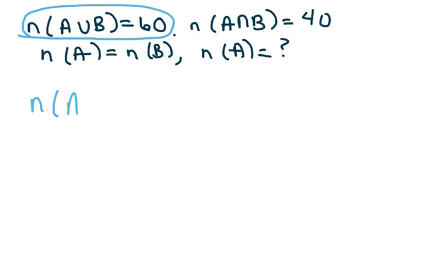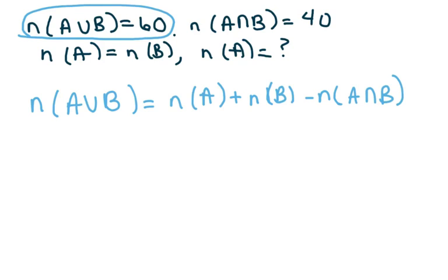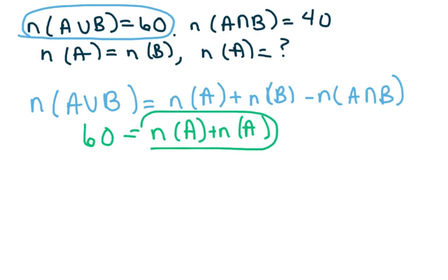So I have the number in A plus the number in B minus the elements they have in common, the intersection. So I have 60 equals, now my number in A equals my number in B, so I'm just going to write them as the number in A plus the number of elements in A, so there's two of them because they're going to be the same anyway.